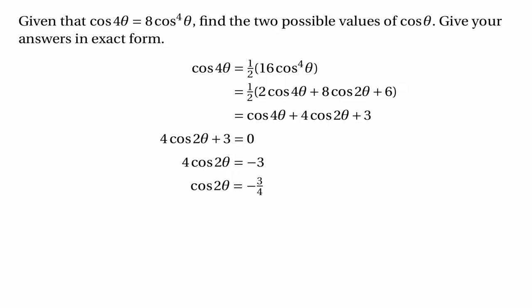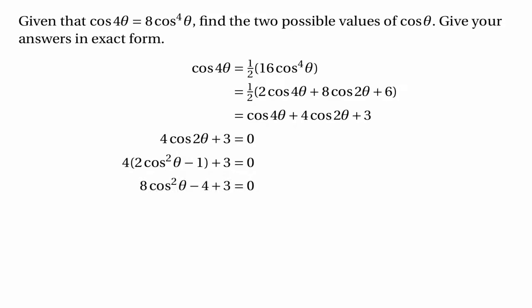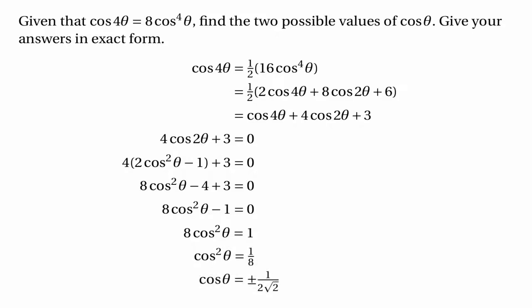Rather than going straight to cos 2θ equals minus 3/4, which doesn't give an exact solution, a better method is to replace cos 2θ with 2 cos²θ minus 1. So we get 4(2 cos²θ − 1) + 3 equals zero, giving 8 cos²θ minus 1 equals zero, then 8 cos²θ equals 1, so cos²θ equals an eighth. Therefore cos θ is plus or minus 1 over 2√2.